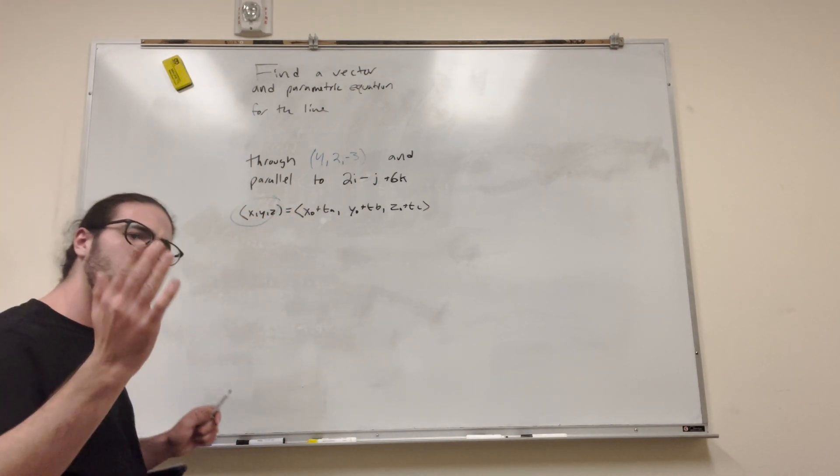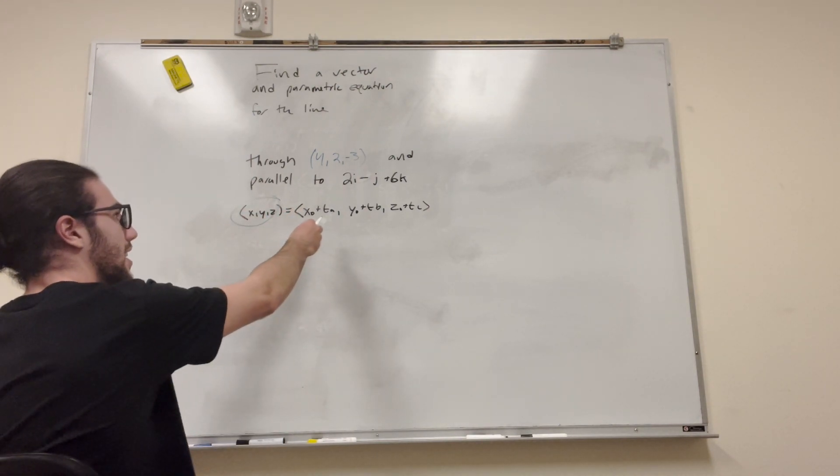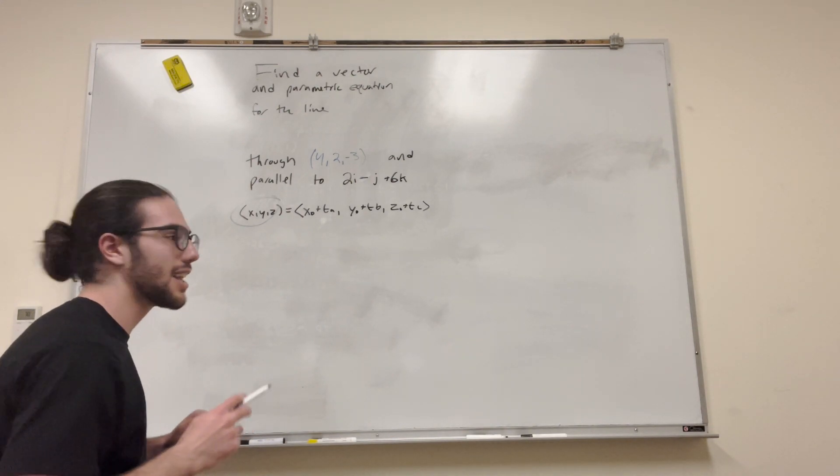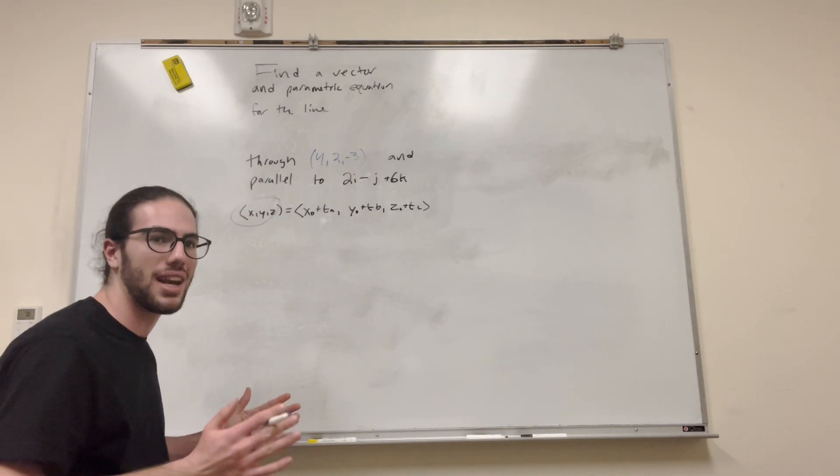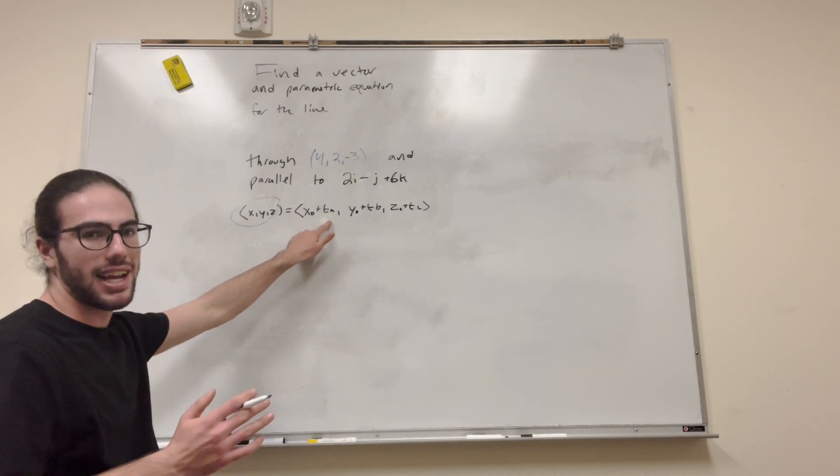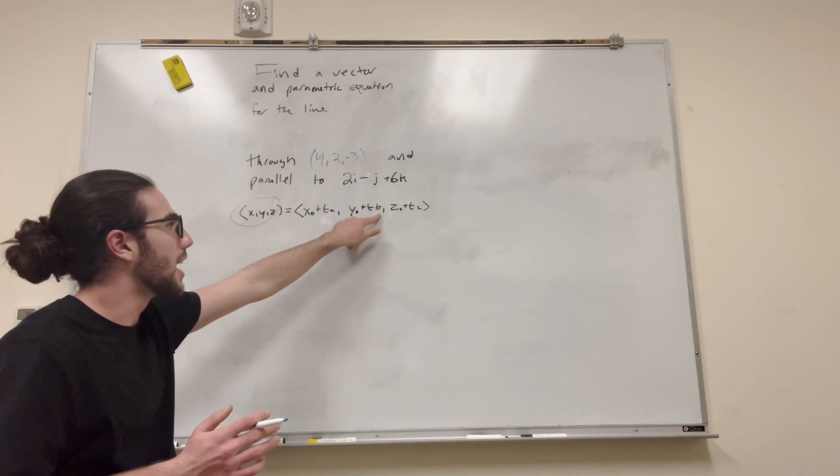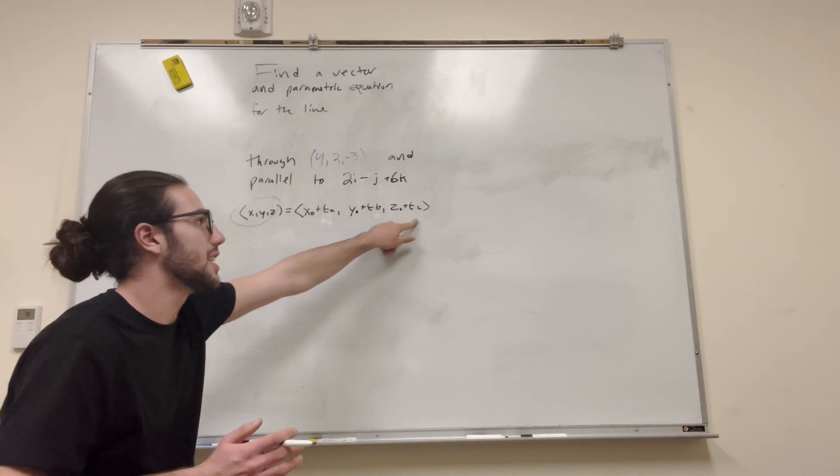So what that T does is it just determines how long it is, how short it is. And A is a vector, basically. That is the direction that it's pointing in. So A is an X component, B is its Y component, and C is its Z component.